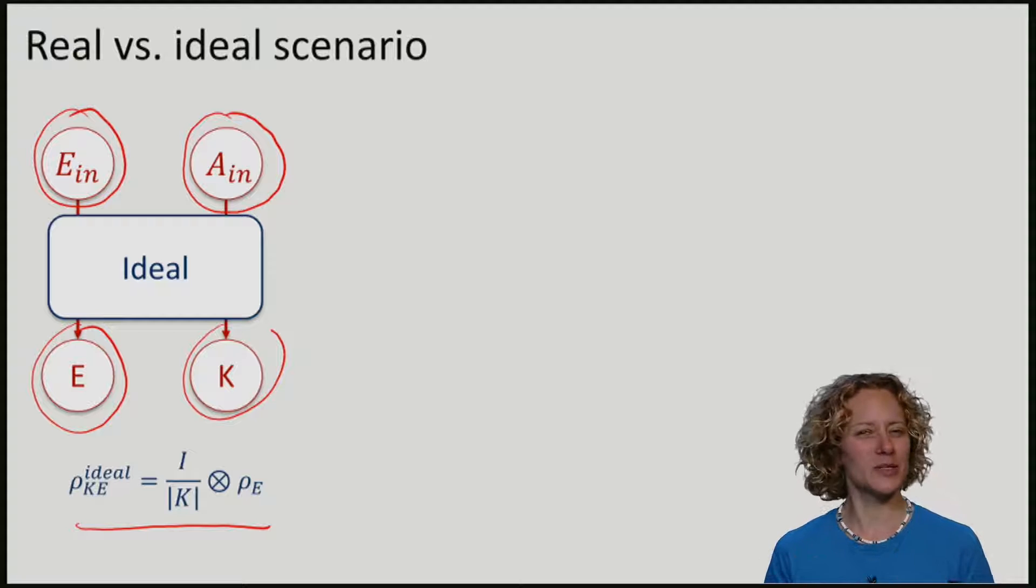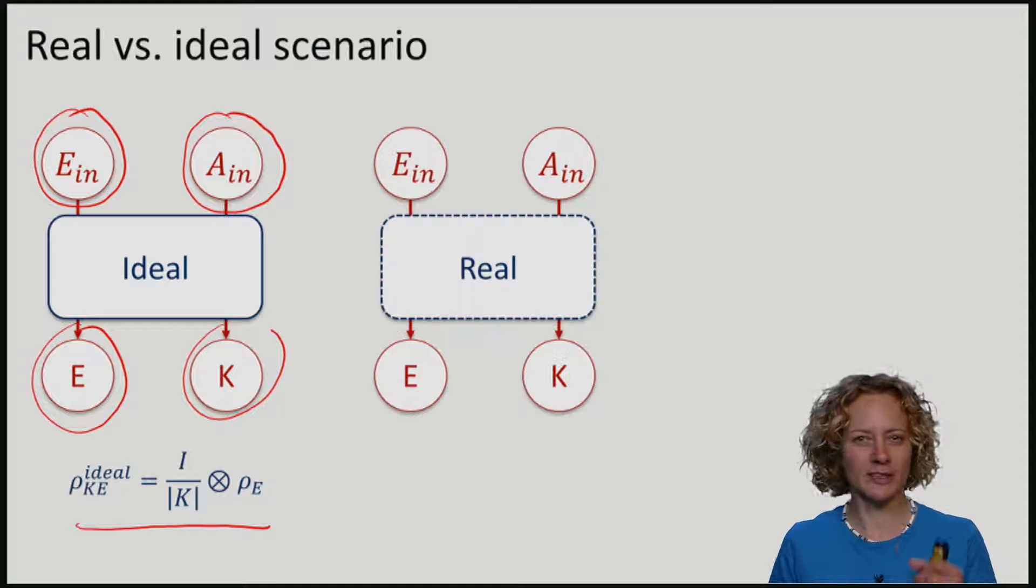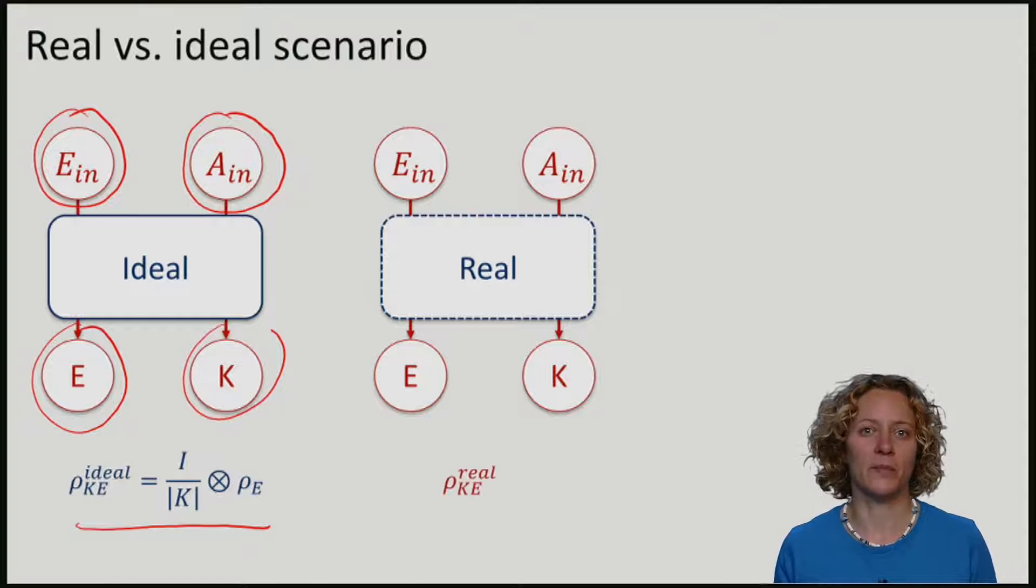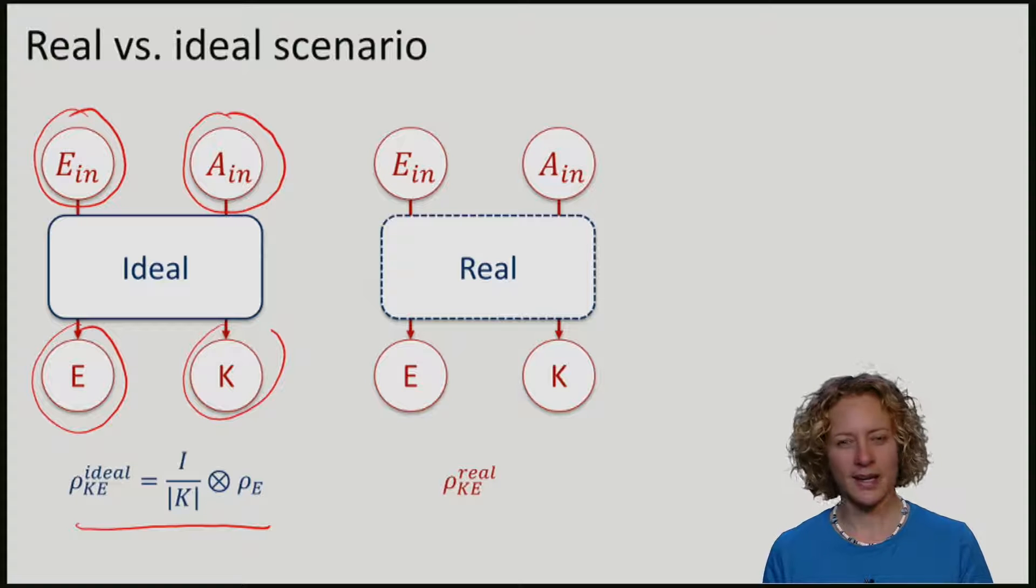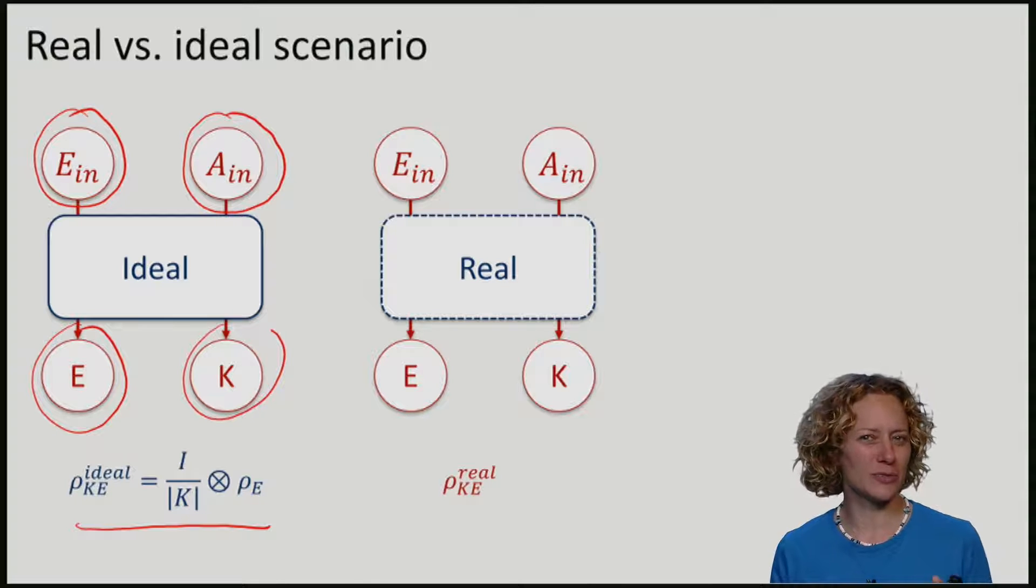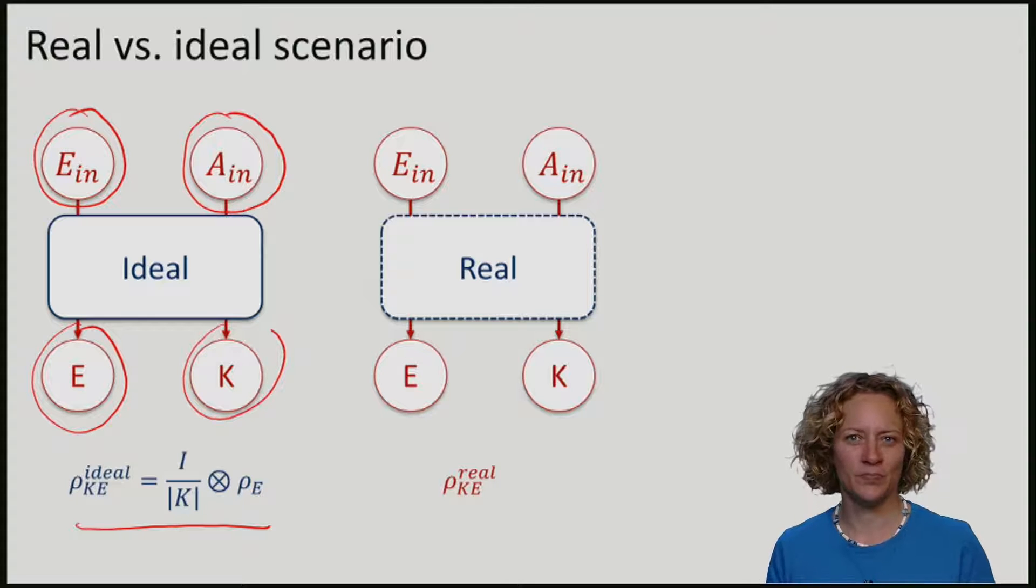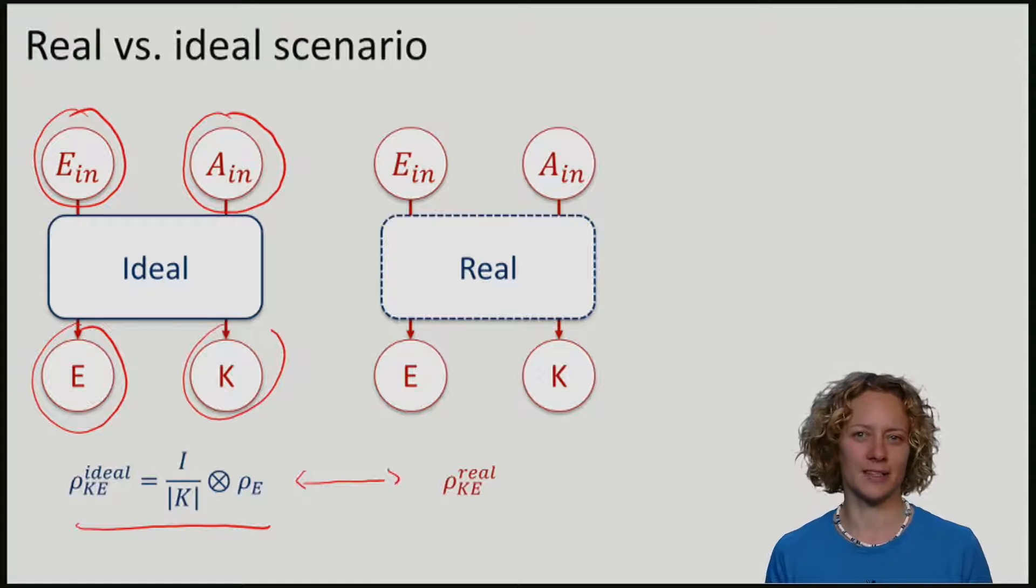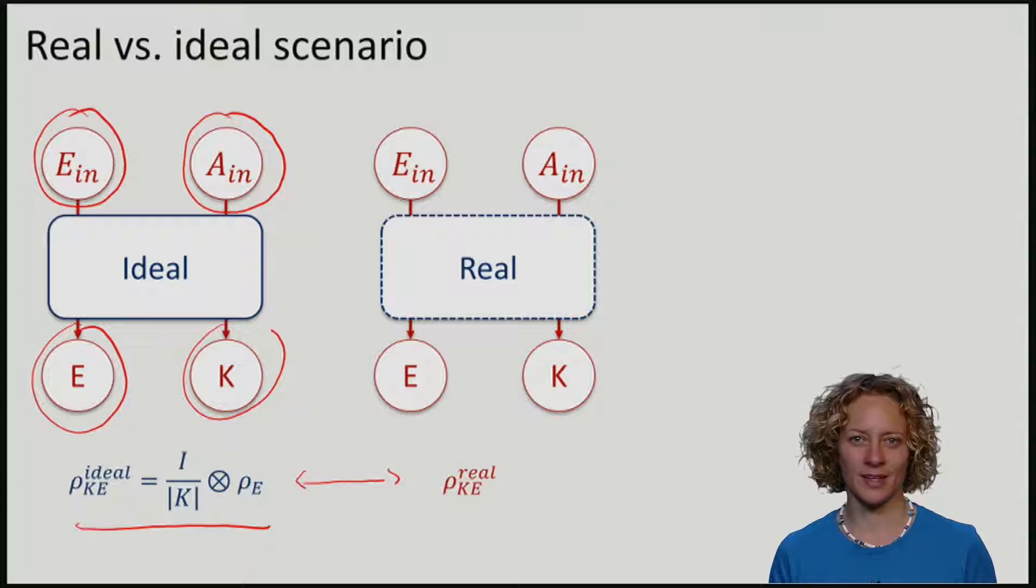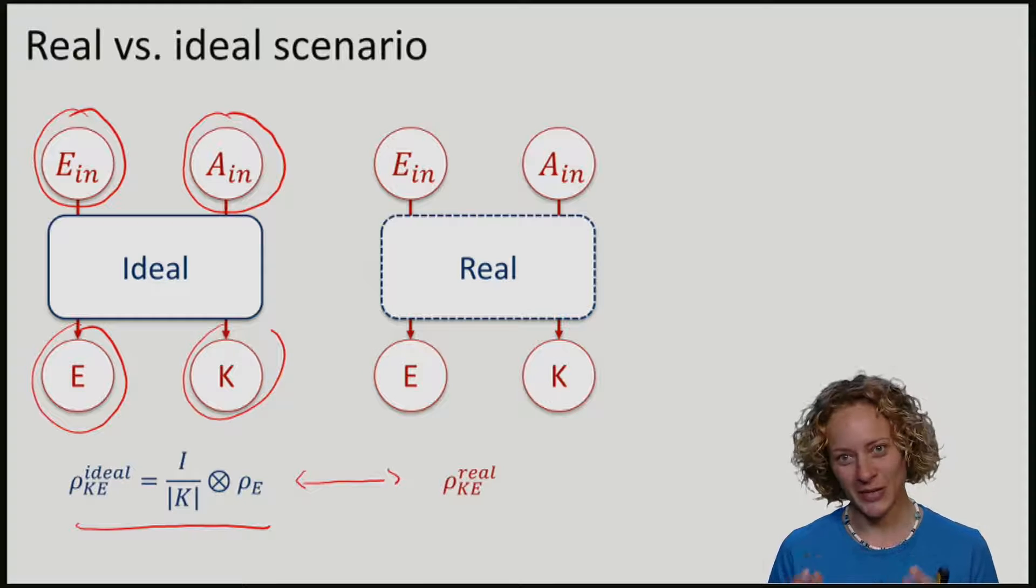Now, in any real protocol, things are typically not as beautiful as in the ideal case. We will run a real protocol, and we will end up with some real state. Now, we want our real protocol to nevertheless be sort of useful and good. So, we would want that the real state is somehow close to the ideal state. What I want to discuss with you now is what do we mean by close?